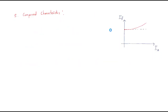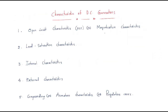Open circuit characteristics means we discuss a graph of EMF versus field current — EMF generated versus field current. This graph gives us the open circuit characteristics, also known as the magnetization characteristics.